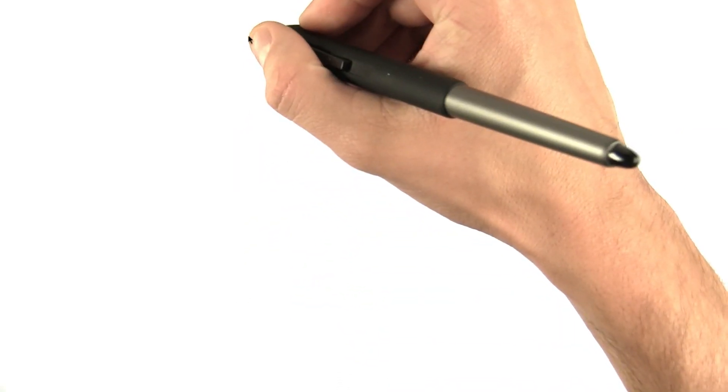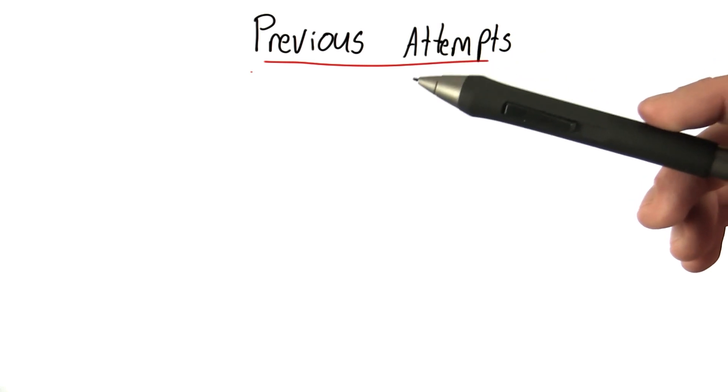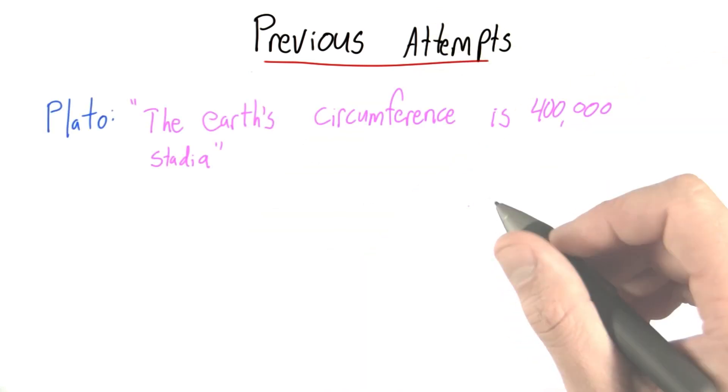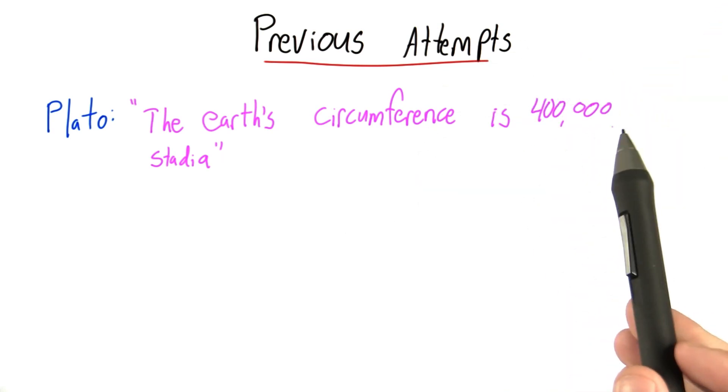Now, before we get to Eratosthenes' solution, let's talk about some previous attempts made to calculate the circumference of the Earth. One famous thinker, Plato, estimated the Earth's circumference at 400,000 stadia.